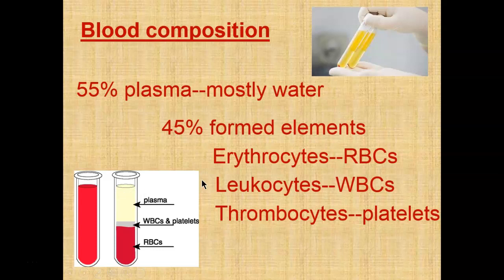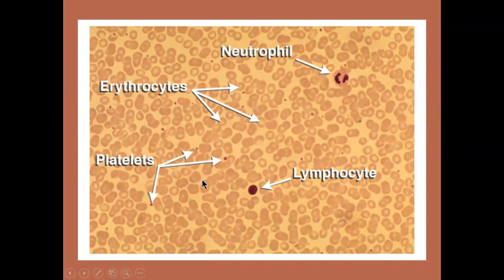Here you see a normal blood smear. The most numerous cell type are the erythrocytes — your red blood cells. They are very small and biconcave in shape, like a biscuit dough that's been squished with two depressions on each side. Erythrocytes begin their life cycle with a nucleus — needed to make proteins and hemoglobin — but when mature they eject the nucleus, becoming little bags of hemoglobin. This gives them the biconcave shape and more surface area to carry oxygen.